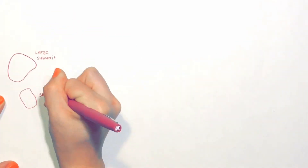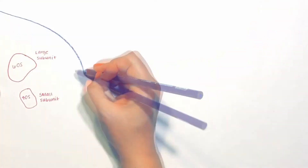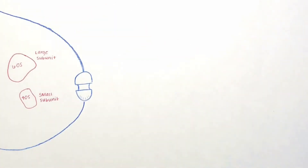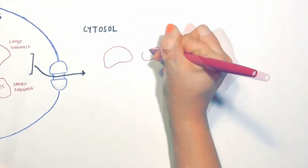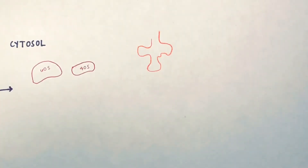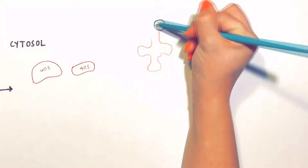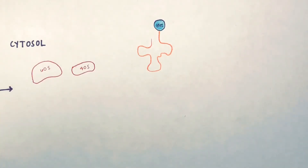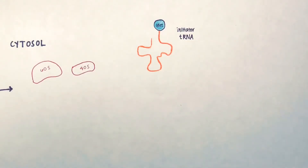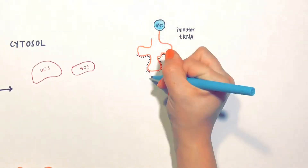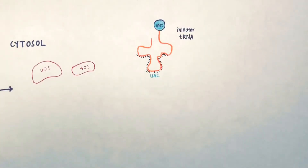In the translation of eukaryotes, initiation is the first stage. The ribosome consists of a large subunit, 60S, and a small subunit, 40S. These pre-ribosomal subunits, formed in the nucleolus, travel to the nucleus and exit through nuclear pores into the cytosol. In the cytosol, the tRNA carries methionine — an amino acid. This structure is known as the initiator tRNA, or charged tRNA.